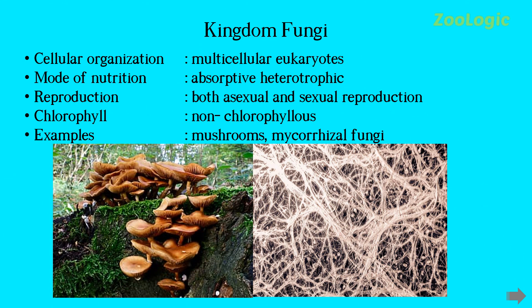Kingdom Fungi consists of multicellular eukaryotes. They are not simple multicellular — they contain tissue-grade organization, making them complex in structure. Their mode of nutrition is absorptive heterotrophic: heterotrophs cannot prepare their own food and depend on other organisms, but absorptive means they cannot ingest food — instead, they absorb food material through their body surface, unlike humans who are ingestive heterotrophs and engulf food through their mouth.